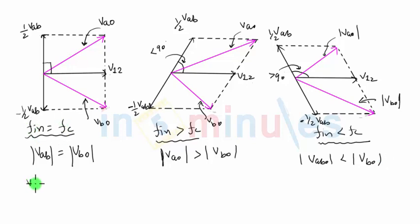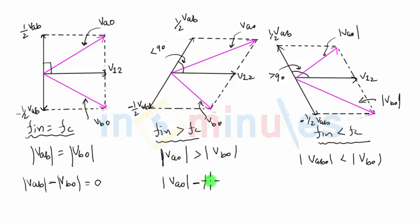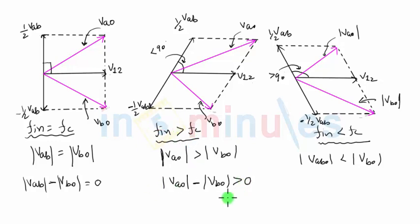The conclusion is: if Fn equals Fc, the difference between the magnitudes of VAO and VBO is zero. When input frequency is greater than carrier frequency, the difference between VAO and VBO is greater than zero. As Fn increases beyond Fc, the phase angle keeps decreasing, VAO keeps increasing beyond VBO, and this difference keeps increasing. This is exactly what we want — if input frequency increases, the amplitude should also increase, enabling conversion from FM to AM.